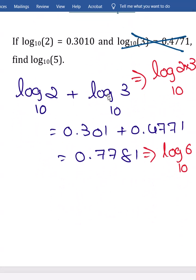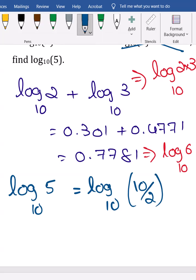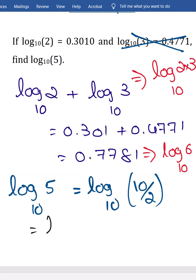So then without log 3, how can we calculate log 5 here? See log 5, 5 can be written as 10 divided by 2. Log a divided by log b, we can use that concept. Log a divided by log b is log a minus log b.